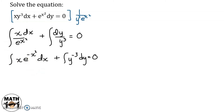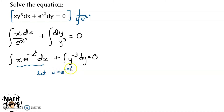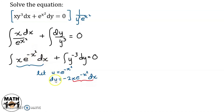But for the first term, anong solution yung gagamitin natin? So, let's try using u-substitution. Let us assign e raised to negative x squared as u. Then, let's take the derivative of this equation. So, du is equal to negative 2x times e raised to negative x squared dx. So, notice this term is also this term. So, if we solve for that by dividing the whole equation by negative 2, we can get du over negative 2 is equal to x e raised to negative x squared dx.